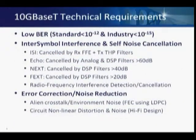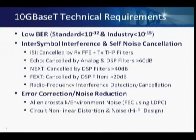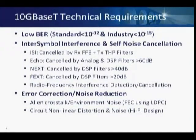Industry requirements dictate a bit error rate of 10^-15, even though the standard calls for 10^-12. To achieve this, a few things must fall into place. From an equalization perspective, we need pre-equalization in the form of Tomlinson-Harashima pre-coding and a receive feed-forward equalizer. For echo cancellation, we need at least 60 dB of echo cancellation, 40 dB of NEXT cancellation, and 20 dB of FEXT cancellation. On top of that, we need to be very cognizant of radio frequency interference — as walkie-talkies are turned on, common mode couples onto the wire, translating to differential, requiring UHF and VHF interference cancellation.